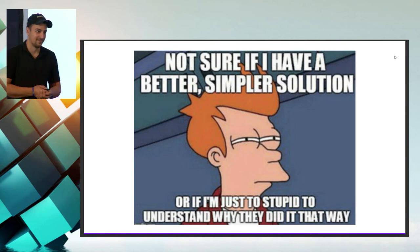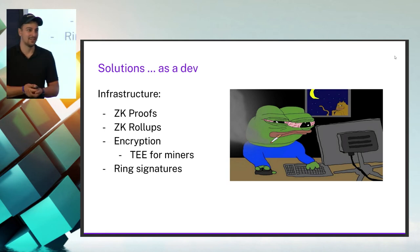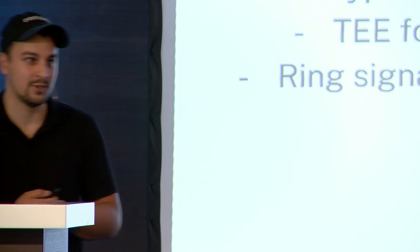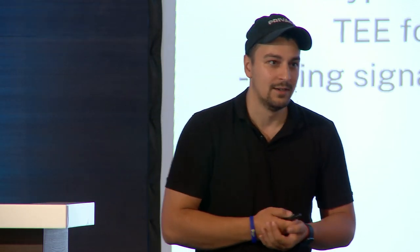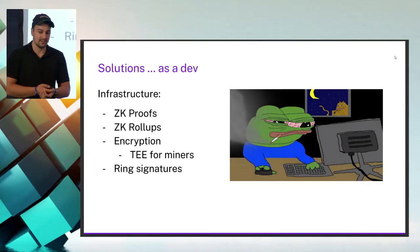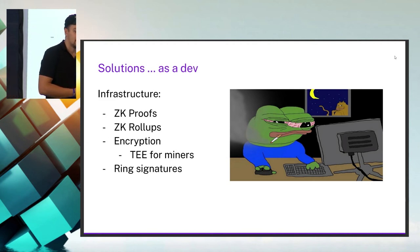So you might wonder whether there is a solution — and of course there is. As a developer, there are plenty of things you can do. Part of our jobs as developers is to advocate for the best implementation of things we are asked to build. When a client comes and wants to build something, try to consult them on what is best and what can be done to make the product useful and future-proof. First: zero-knowledge proofs.